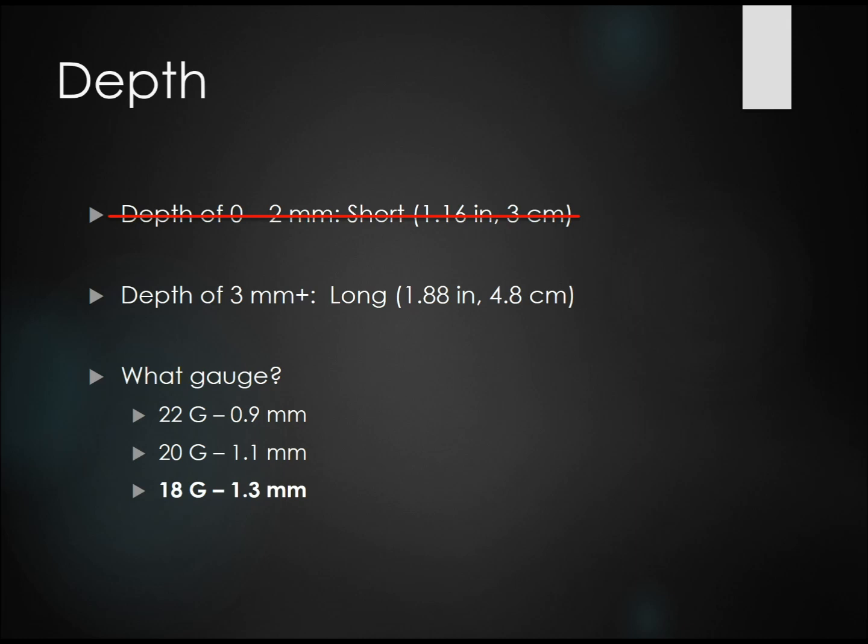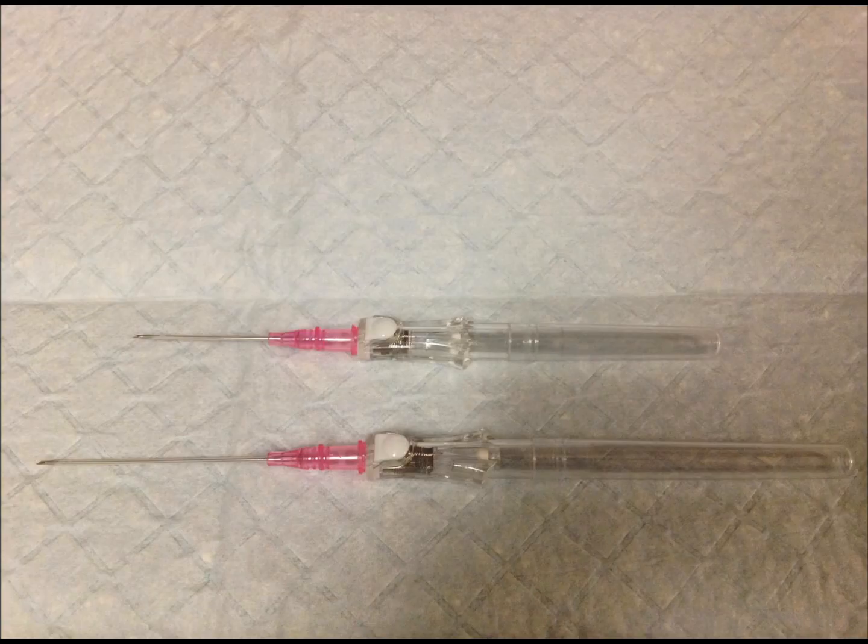Let's talk about gauge. The difference between an 18-gauge and a 20-gauge catheter is only about 0.2 millimeters. I highly recommend using only an 18-gauge catheter because it's easier to see and will give you a better flow rate. Here's an example of a short 20-gauge catheter next to a long 20-gauge catheter.